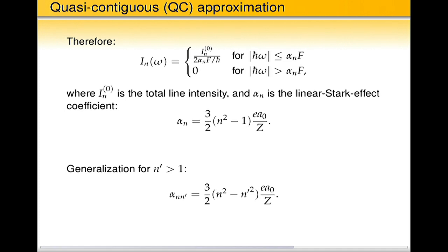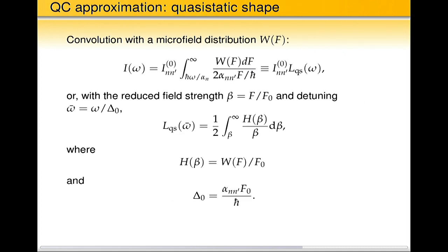There is simple generalization for not just Lyman but in principle any transition from N to N prime, then just straightforward one. So again we have rectangular line shape for fixed value of electric field. So next step, if we wanted to do it in the quasi-static approximation, let's do a convolution with a field distribution. And in the case of, yes, so the field distribution is given by that, and I do by w of f, and I do just simple convolution.